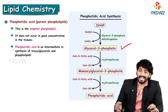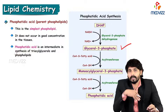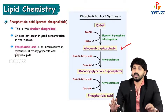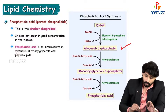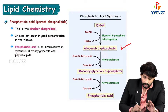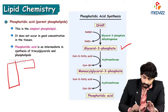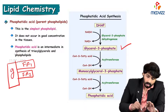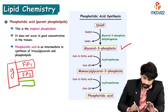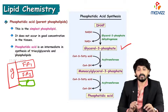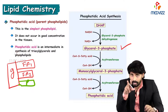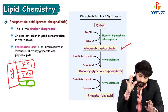Monoacyl glycerol-3-phosphate then accepts one more acyl group at the second carbon, forming phosphatidic acid. So, phosphatidic acid generally carries one glycerol molecule, two fatty acids, and one phosphate group at the third carbon.